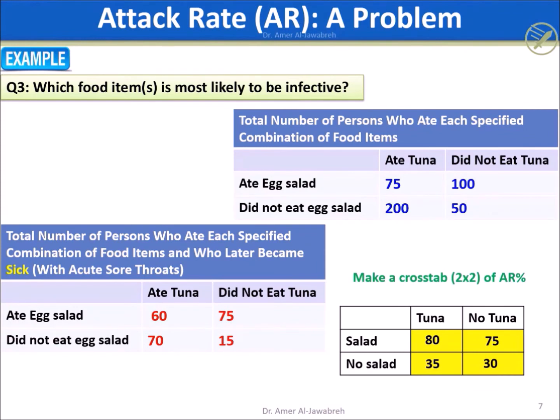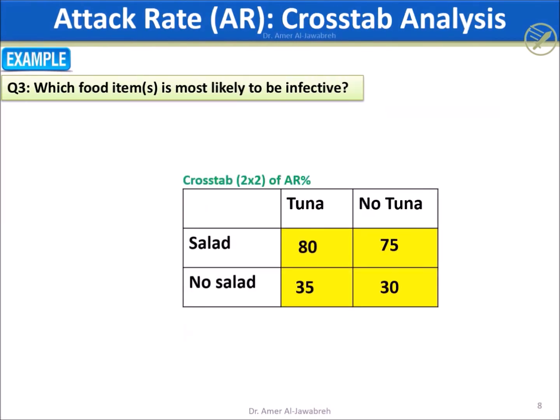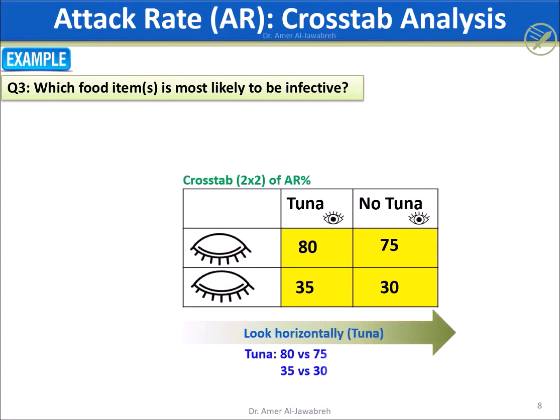Let's analyze the cross-tab. First, look horizontally at tuna and turn a blind eye to the salad. The AR for those who ate tuna is 80%, compared to 75% for those who did not eat tuna, showing no significant difference. The same applies comparing 35% to 30%.